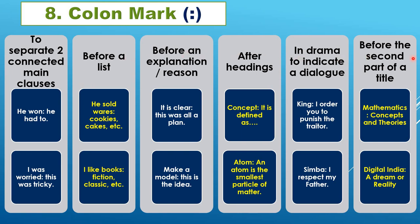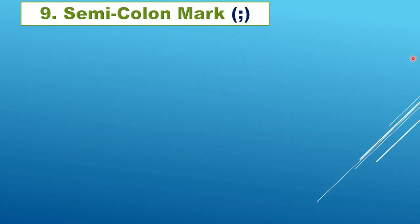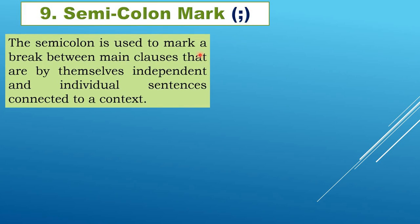Very close to the colon is the semicolon. Let us understand the difference. The semicolon is used between two main clauses, but here — even if you separate them — they are not as tightly connected as with a colon. They can stay separated and still give meaning, but they are connected to the context or situation.